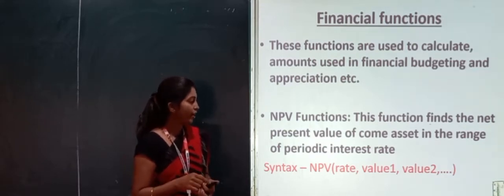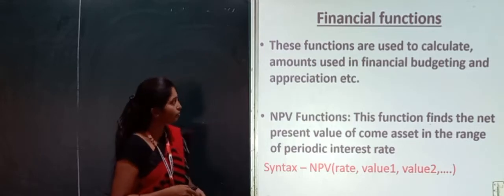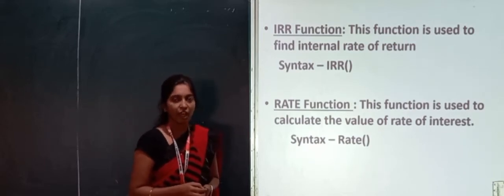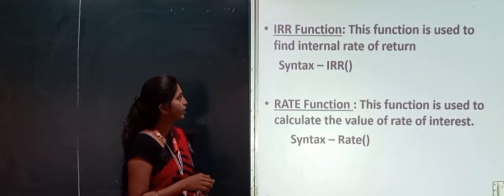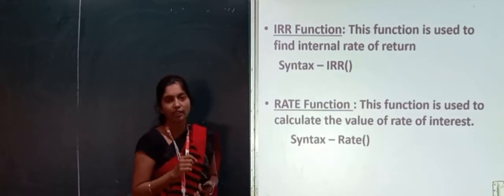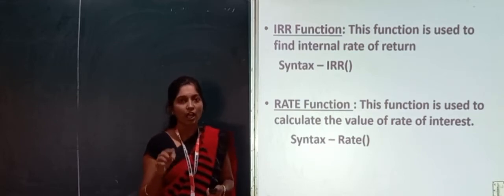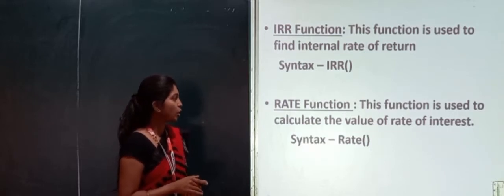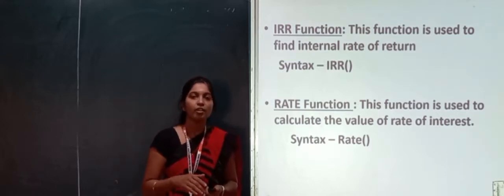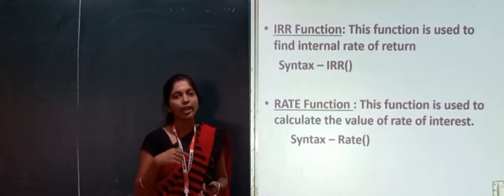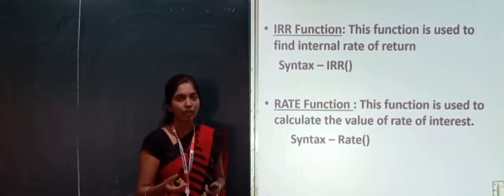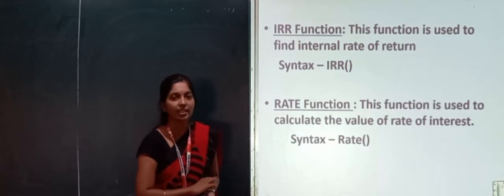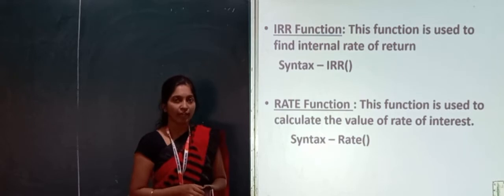The next one is the IRR function — internal rate of return. This function is used to find the internal rate of return, with syntax =IRR(values). Then the RATE function: if you want to calculate the rate of interest for a particular principal amount, we use the RATE function, with syntax =RATE(...).